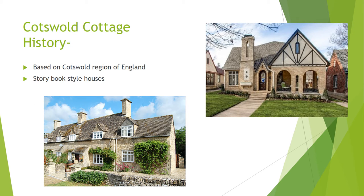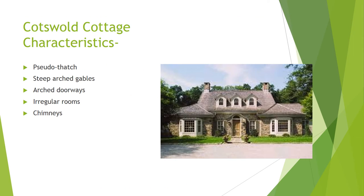The Cotswold Cottage architectural style is based on the Cotswold region of England, also referred to as Tudor Cottages. They are sometimes referred to as a storybook style house. Characteristics include pseudo-thatch construction, steep arch gables and arch doors, and they are made of brick, stone, or stucco. The rooms are commonly small and irregular, and the style often features a prominent chimney near the front of the house.